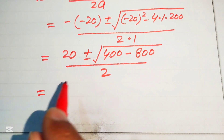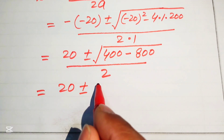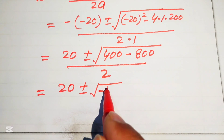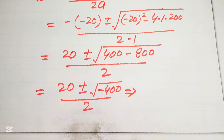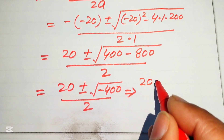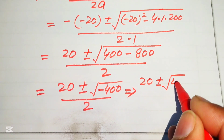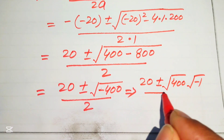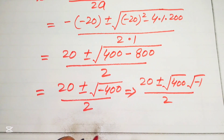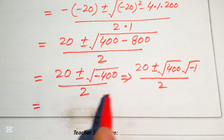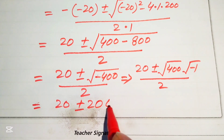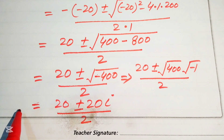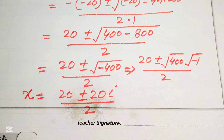Further simplifying, we have 20 plus or minus the square root of 400 minus 800, which becomes minus 400, divided by 2. We separate the square root: this is the square root of 400 multiplied by the square root of minus 1, divided by 2. The square root of 400 equals 20, and the square root of minus 1 equals iota.